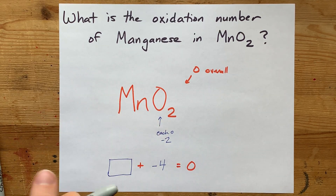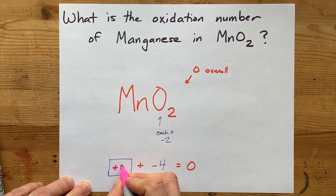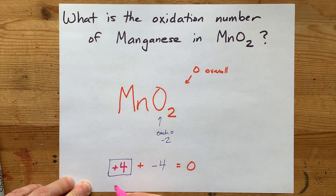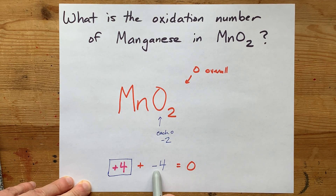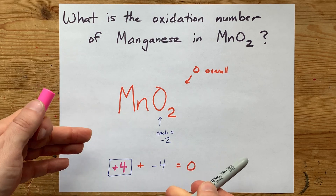The answer is positive four. Positive four and negative four cancel to make zero.